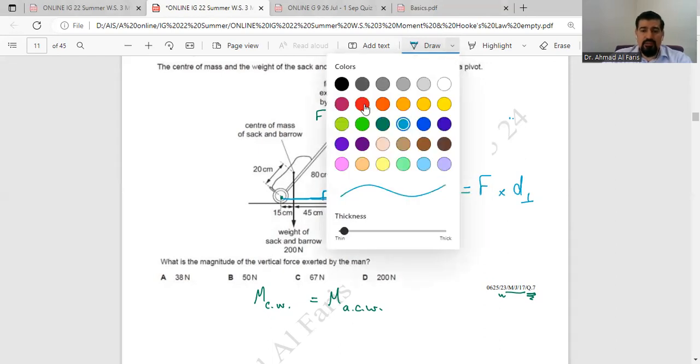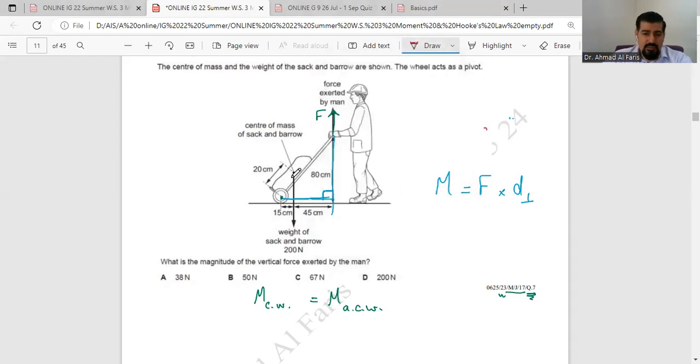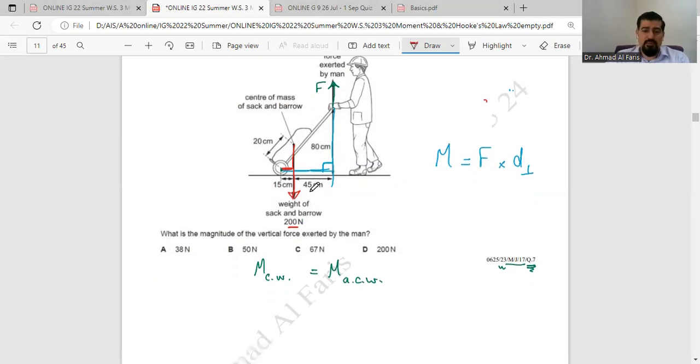The same thing here. When we talk about the weight of the sack and the barrow, it acts downwards in this direction, 200 Newton, and this is the distance to it, which is the 15 centimeter. It doesn't matter how long is this distance, 20 centimeter, unless we have the angle, and this is for A-level question. And it doesn't matter how high is the force of the hand, which is the 80 centimeter. These are negligible. We are not going to look at these distances. So we are going to look at these distances, the 15 centimeter and the 45 centimeter.